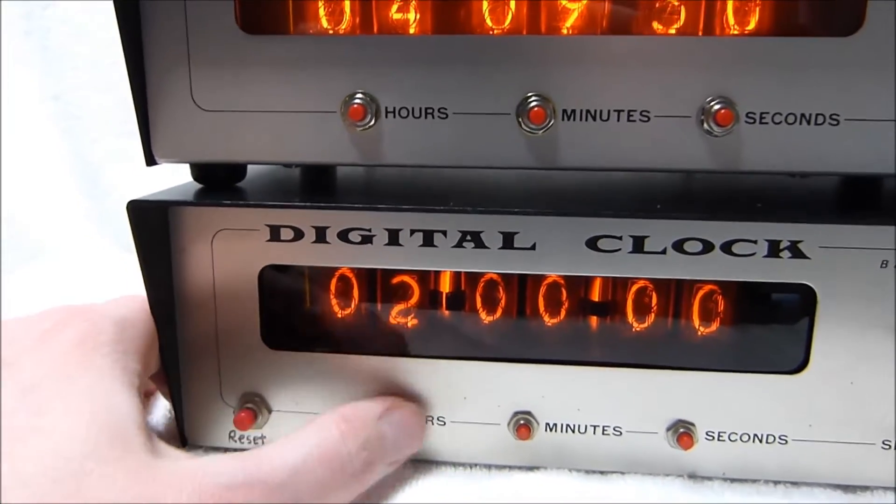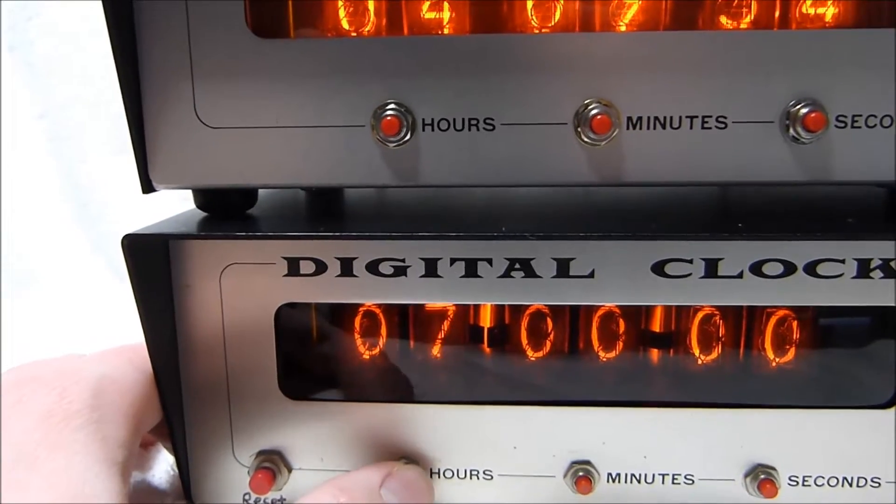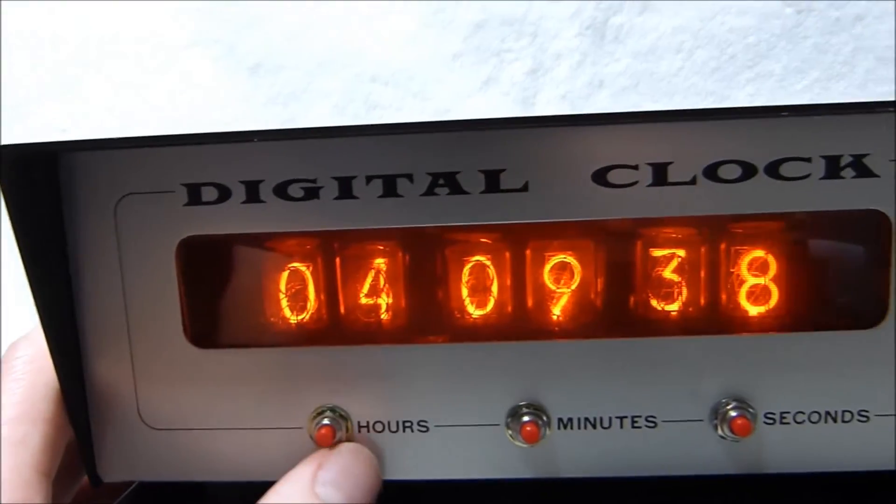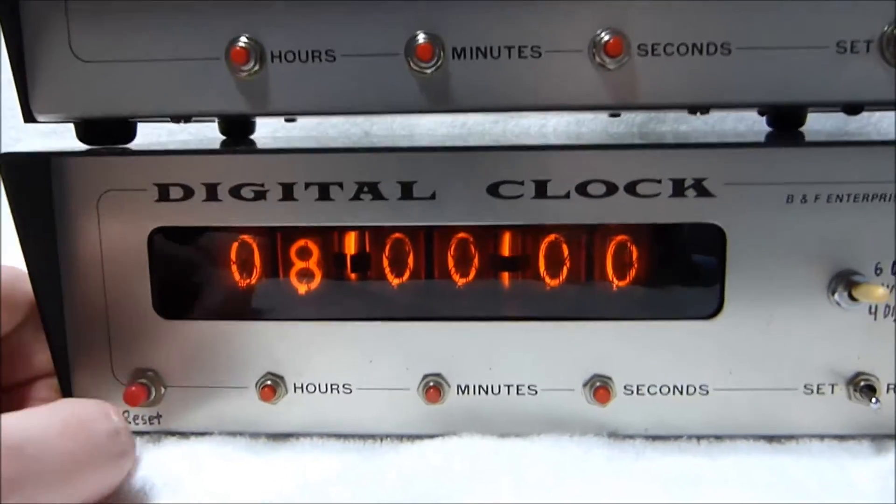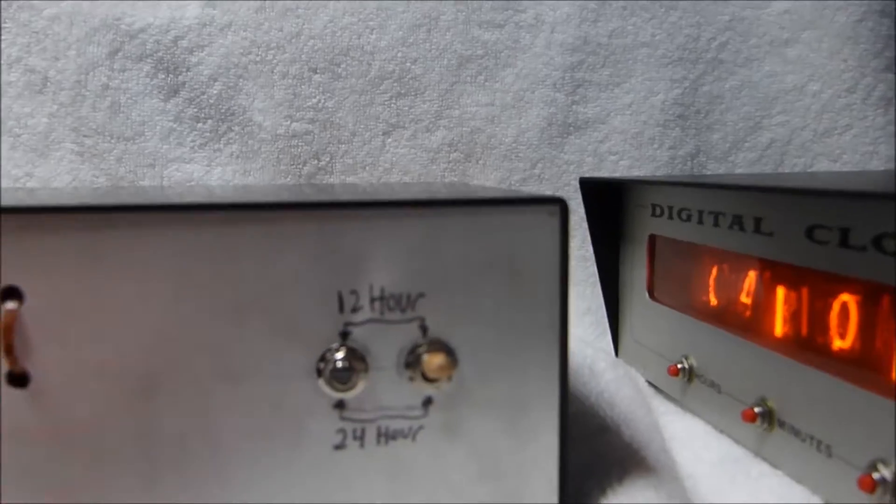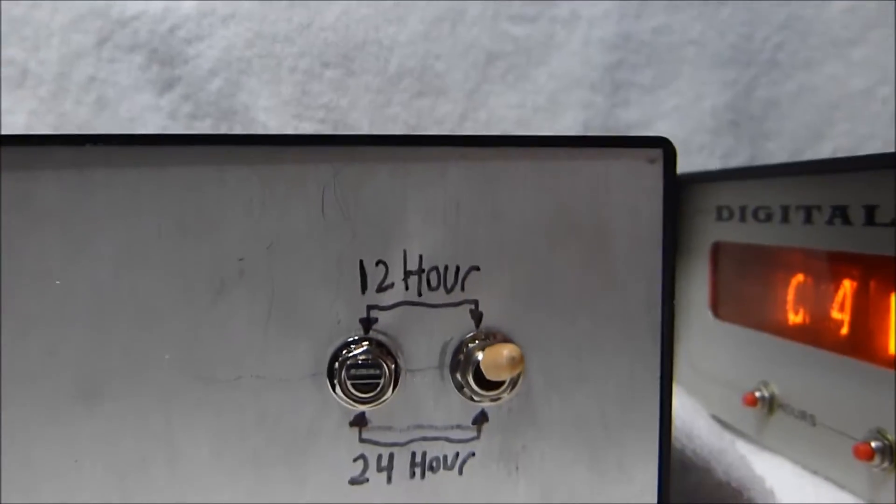Now this one is set up for 12 hours, but it has the option of being a 24-hour clock. This upper one is 24 hours only. There is no AM-PM indicator though, but I guess you don't really need it without an alarm. On the back here are two additional switches that the original builder I believe added.